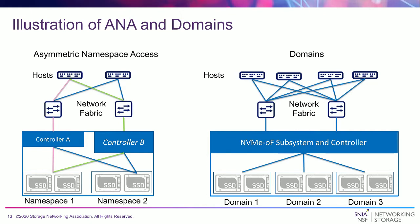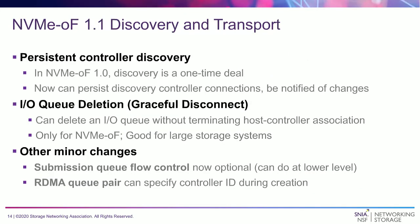On the right side, we have an example of domains and how you could have a fault or a reboot of just one domain. Let's say I have a big controller with three domains, but a problem happens with domain 3. Before, we would have to kill the whole subsystem and restart all domains, so hosts connected to domains 1 and 2 would also lose their connection temporarily. But now, we can reboot just domain 3, disconnect it, restart it, remove the fault and restore everything — and all the while, any I/O going to domains 1 and 2 continues uninterrupted.